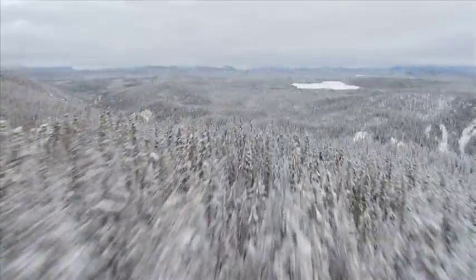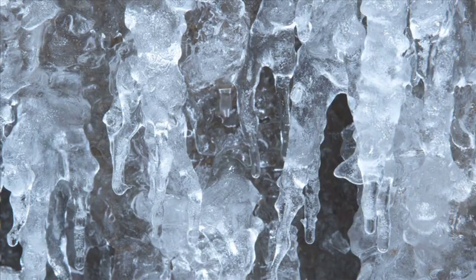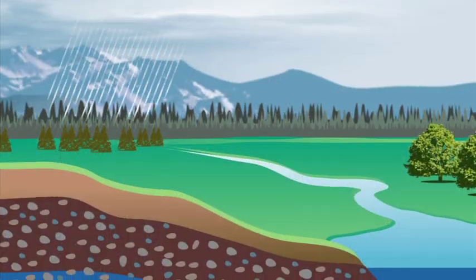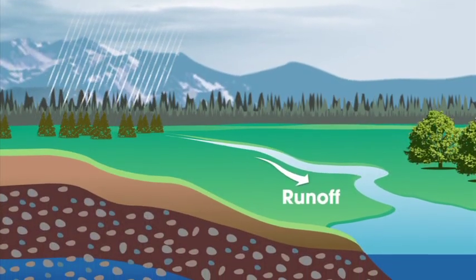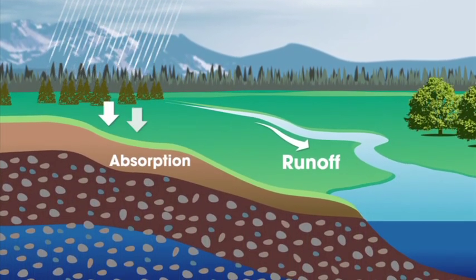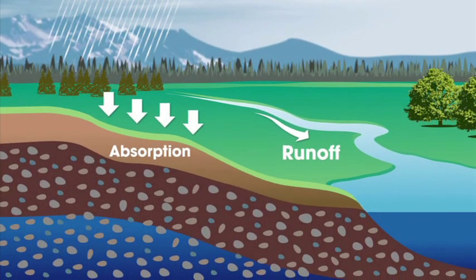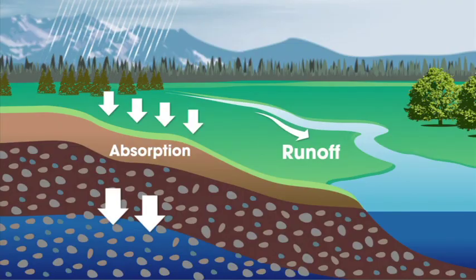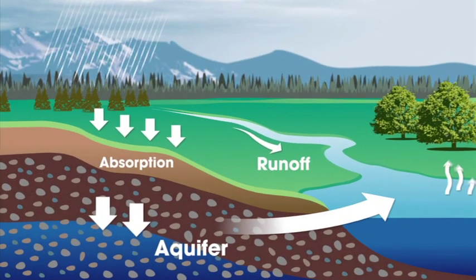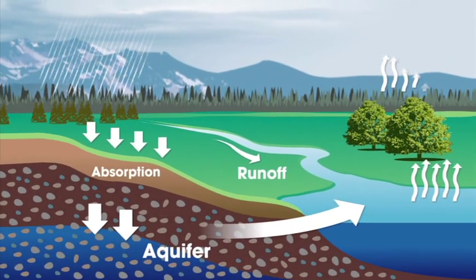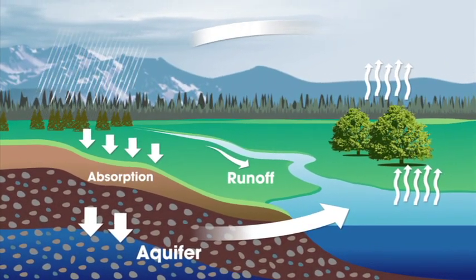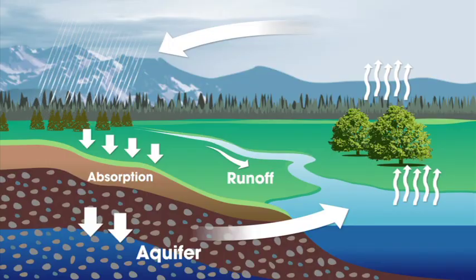When snow and ice melt, the water either runs off into a stream or is absorbed into the ground. That water collects far beneath the surface — we call that layer of groundwater an aquifer. To complete the water cycle, groundwater seeps back into surface water and the whole process begins again.